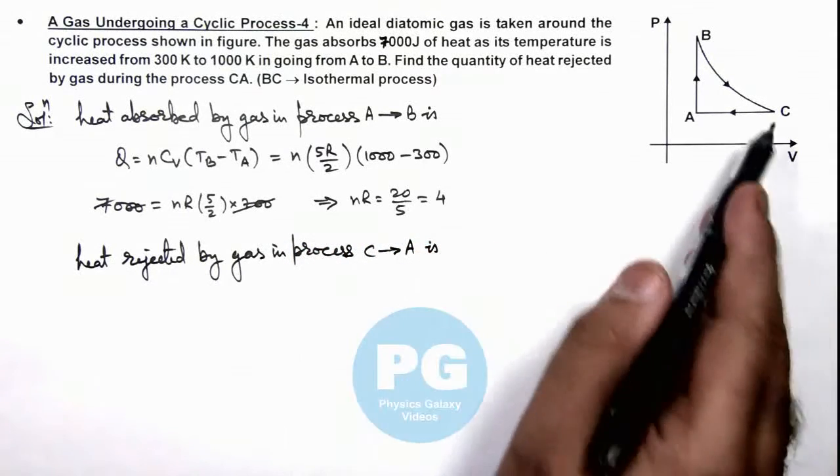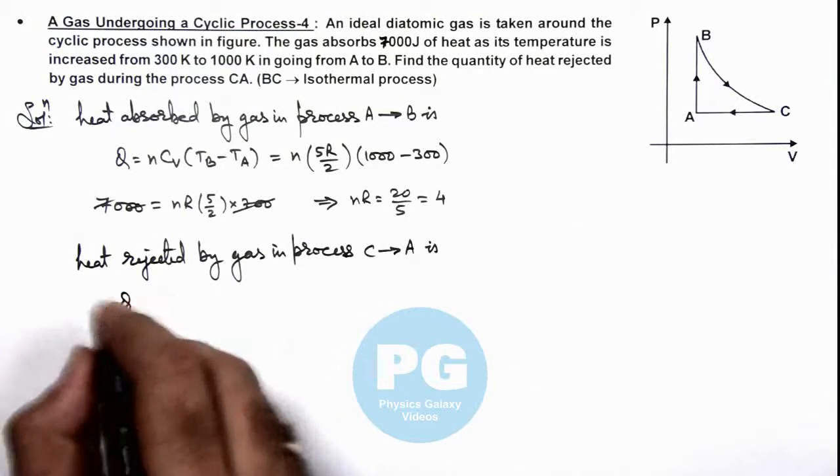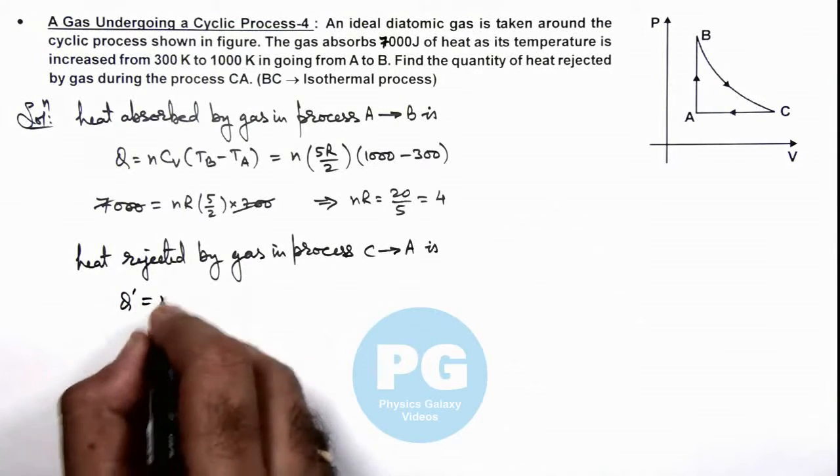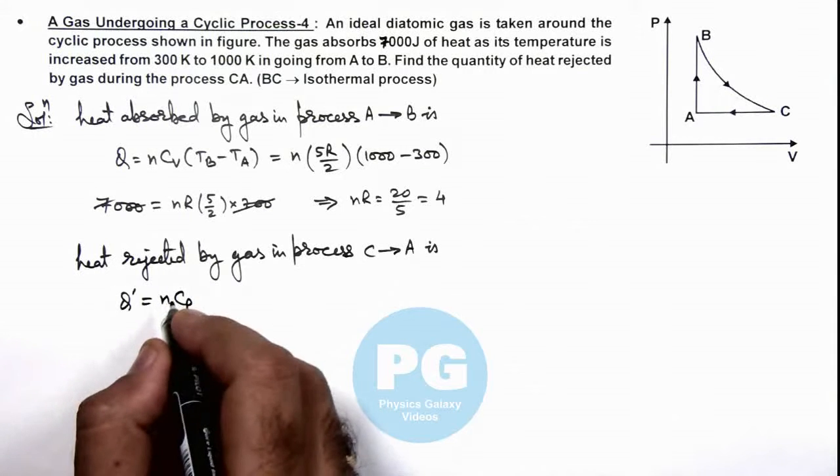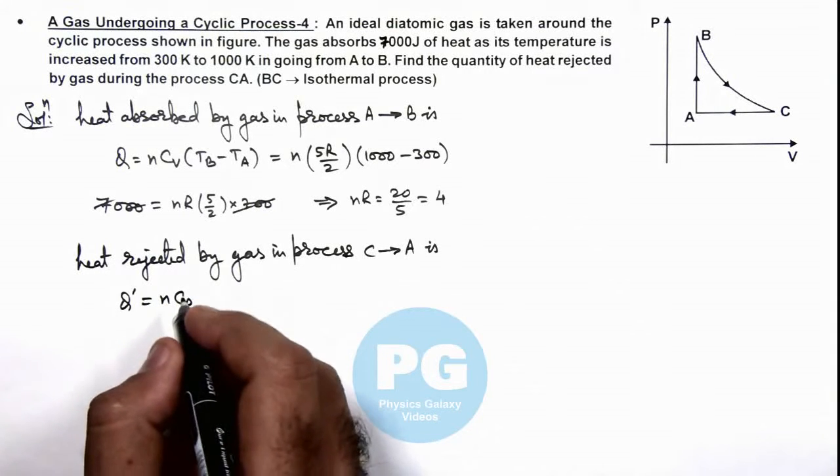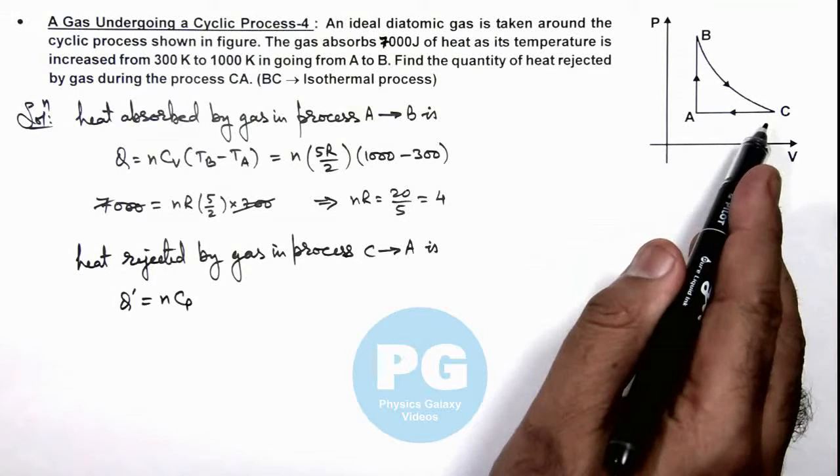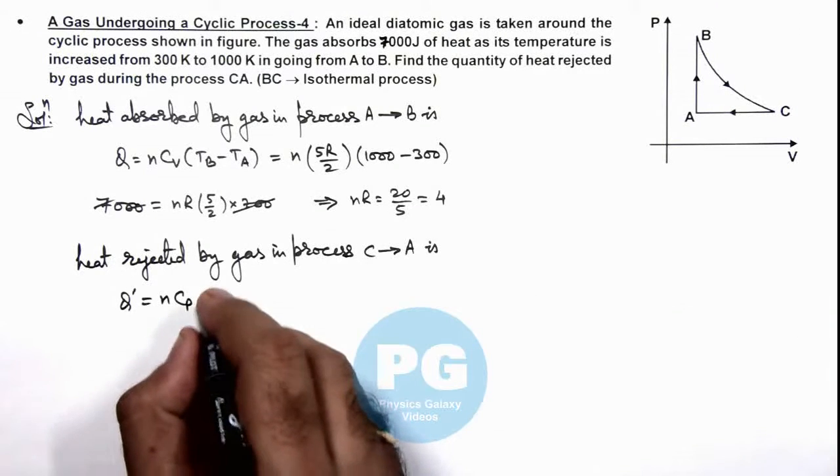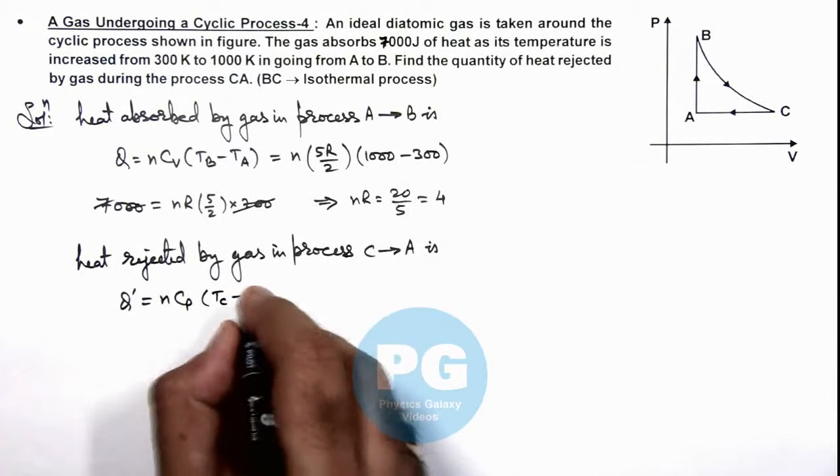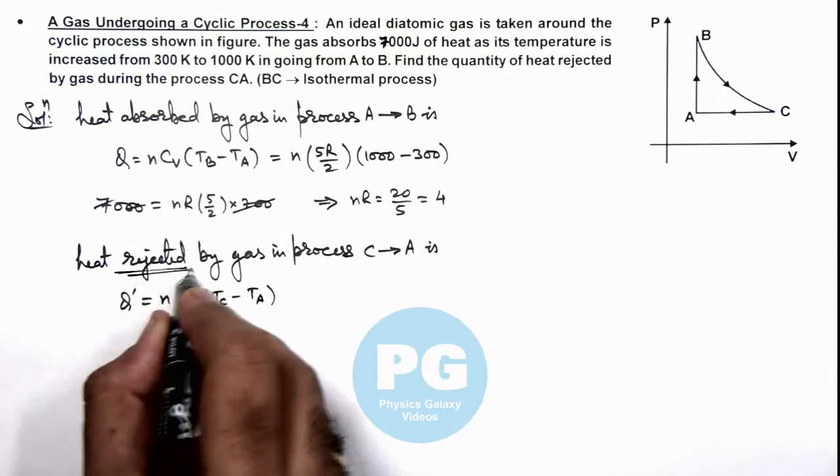As C to A is an isobaric process, we can write heat rejected Q' is nC_p. Now rather than writing final temperature minus initial temperature, we'll write T_C - T_A, initial minus final, because we are calculating the heat rejected.